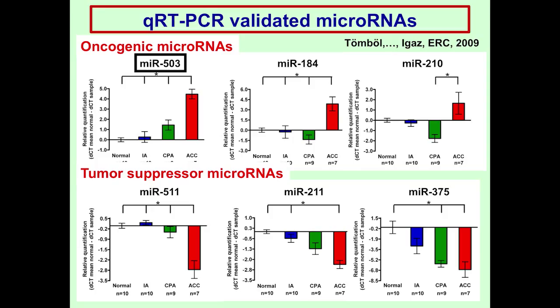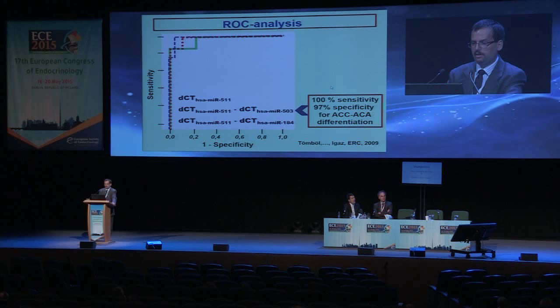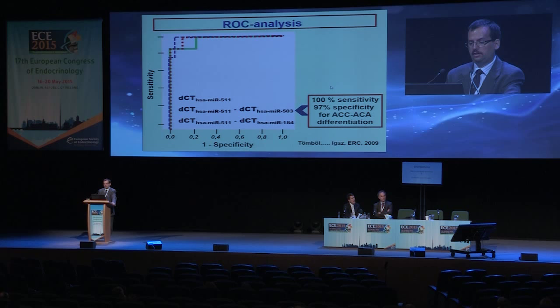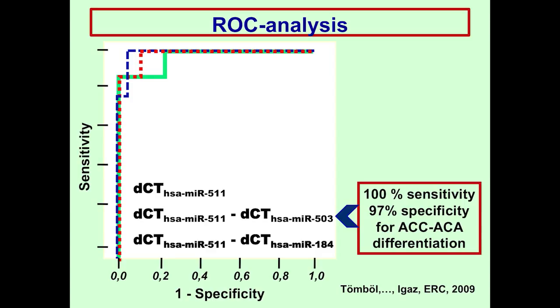Three of these were highly overexpressed in ACC — these are oncogenic — and three were underexpressed — these are tumor suppressors. I would like to highlight miR-503 and miR-210; miR-210 is a general hypoxia-miR overexpressed under hypoxic conditions in many tumors. As the histological diagnosis of malignancy in adrenocortical cancer is difficult, by performing a ROC analysis, the difference between miR-511 and miR-503 turned out to be the best, with high sensitivity and specificity for differentiating ACC from adrenocortical adenoma, though it was only on a small cohort of ACC samples.